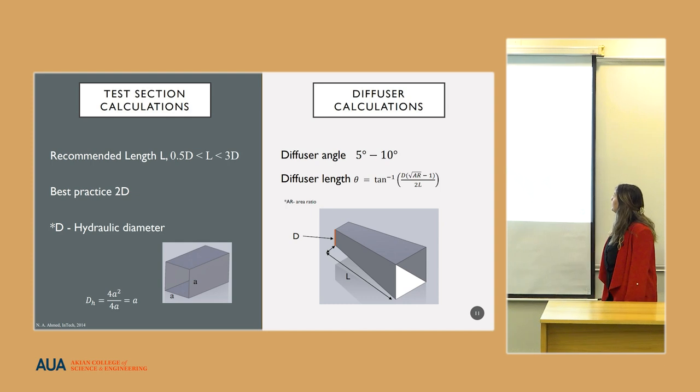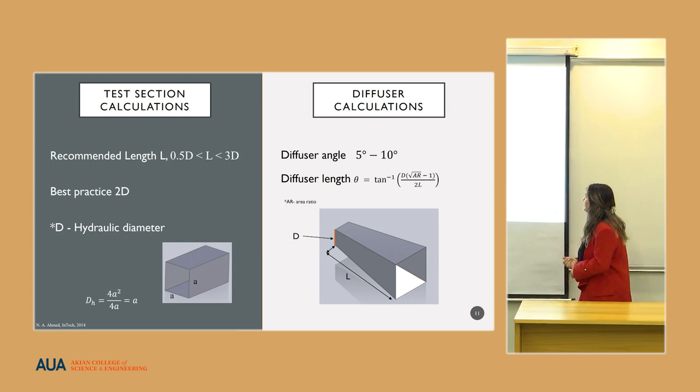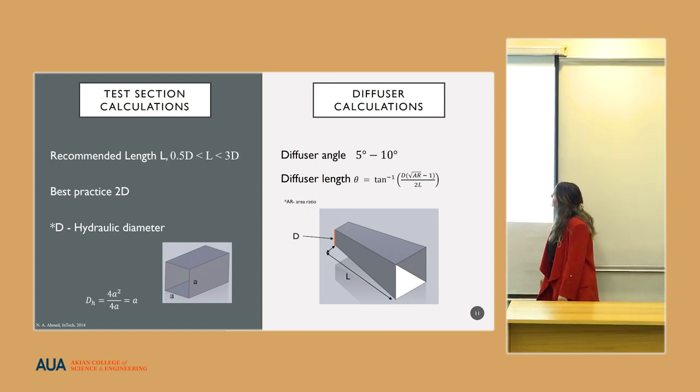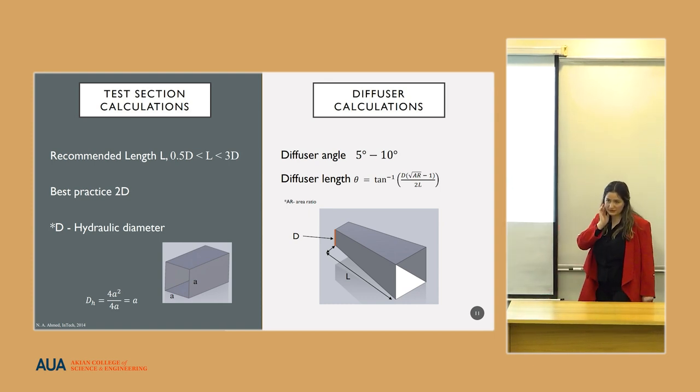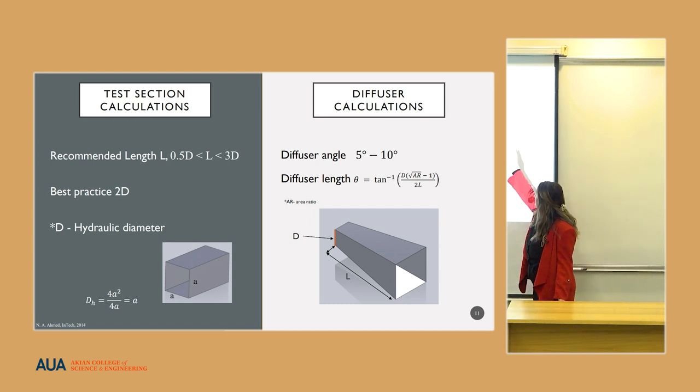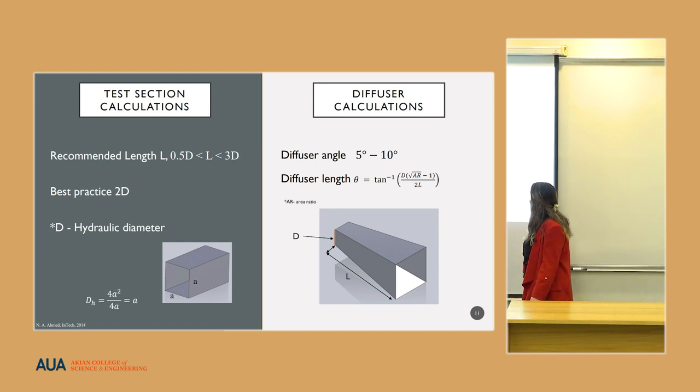For the diffuser, there are two main components that are linked to its design. First, it's the angle which is expanding, which is this one, and it should be from 5 to 10 degrees, depending on the width. Also, its length is decided by this equation, where it is the inlet cross-section area. And secondly, AR is the area ratio of this part and this part.